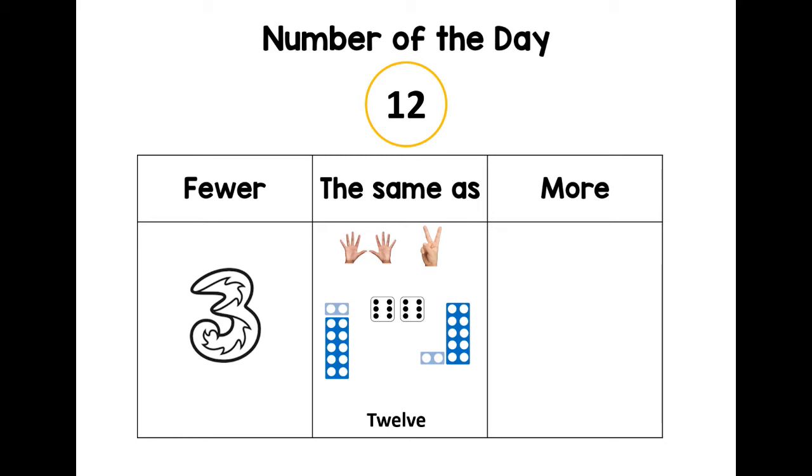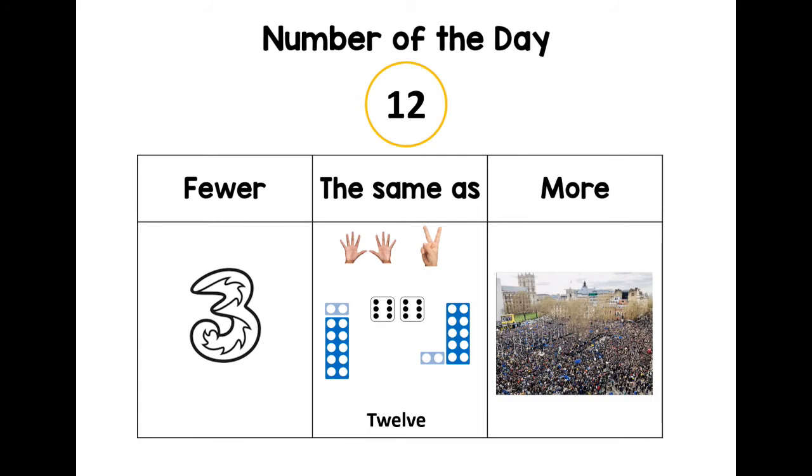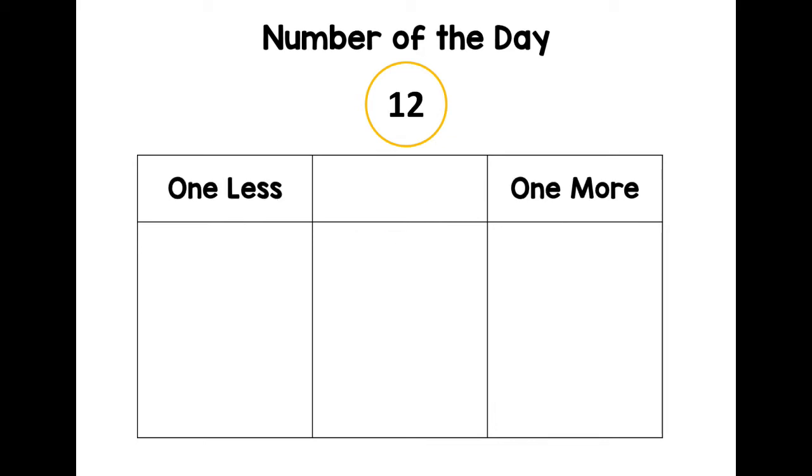And the other side says more. Can we think of a number that is more than 12? So if we've counted up to 12, when we keep going, all the numbers we say after 12 are more. So I thought of, oh wow, that's a lot. I think that are thousands of people. Let's have a look at the numbers that come one more and one less than 12.